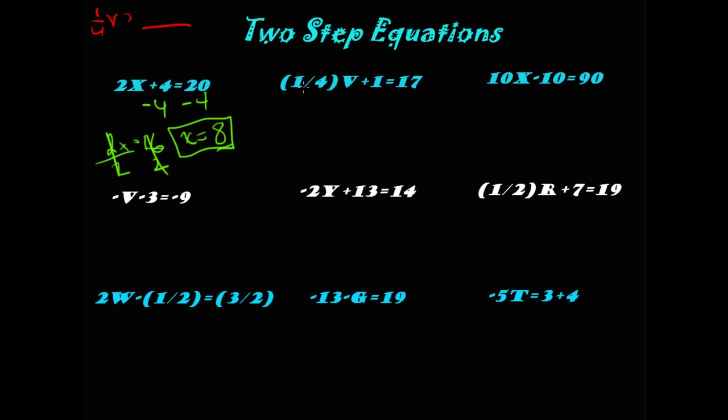Alright, next problem. (1/4)V plus 1 equals 17. So, first, we'll subtract the 1 from each side. We'll get (1/4)V is equal to 16. Then, we'll multiply 4 by each side because this is really 4 over 1. Those will cancel to 1 and we are left with 16 times 4 which is 64. 64 divided by 4 is 16. 16 plus 1 is 17.